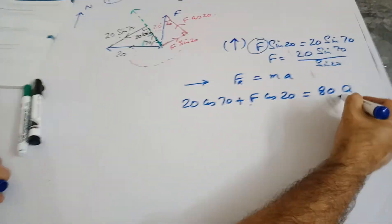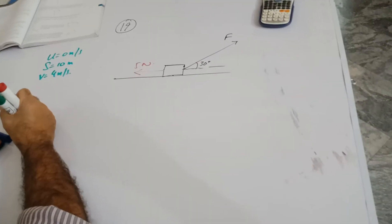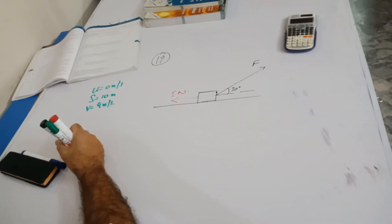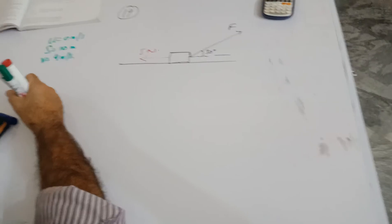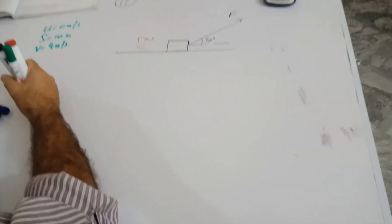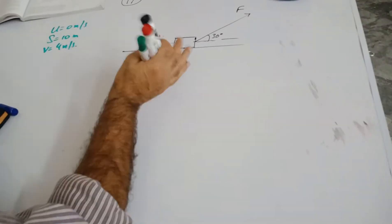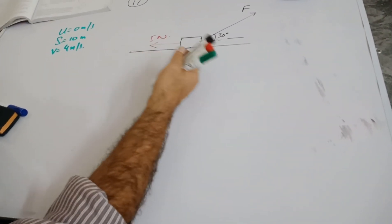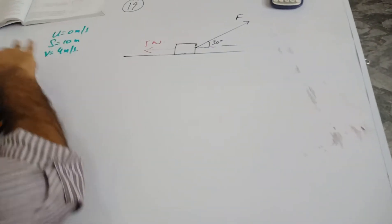So now you use this, find this F which is going to be F equal to 20 sine 70 over sine 20. So this value has to be substituted over here so that you can find this A. The 19th question, the last problem that I'll be doing for this exercise, and after this I'll be moving into the next topic.